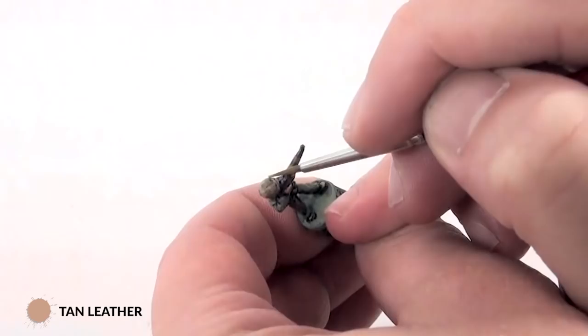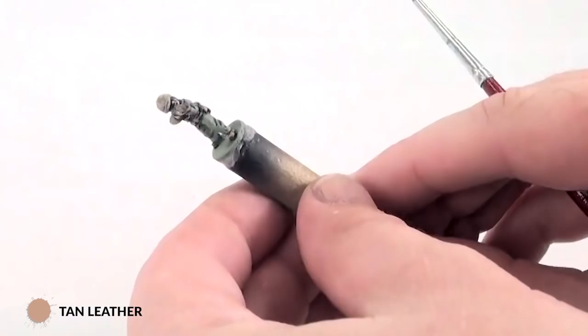I just go over all of those items with a little bit of tan leather. It's a lighter brown. Again, like the web gear, try to leave a little bit of the underlying color showing through on the sides, just again to add some shadow and shade.